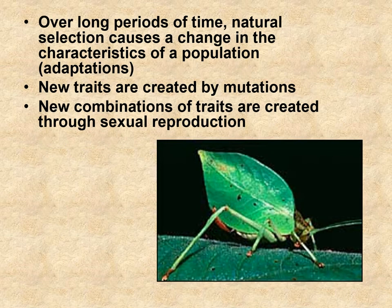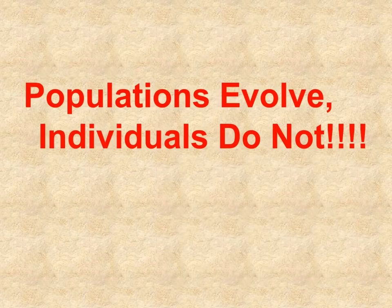Over long periods of time, natural selection causes a change in the characteristics of a population — new traits are created by mutations. This bug here has no clue what it looks like; most animals don't know what they look like. You can look in a mirror and know what you look like, but most creatures have no idea. This creature doesn't know it looks like a leaf — it just knows it lives in a tree and nothing eats it. It was a mutation: at some point this creature was born looking like a leaf and happened to be living in an area with leaves, so it was able to blend in.